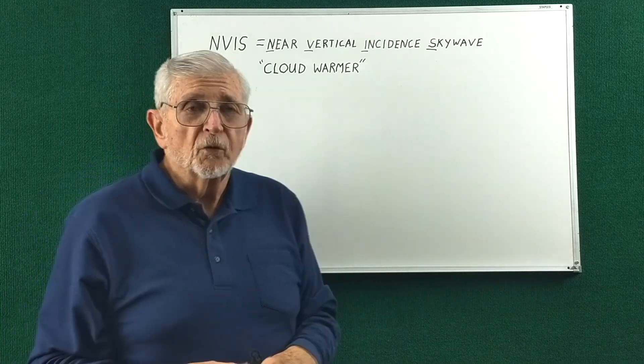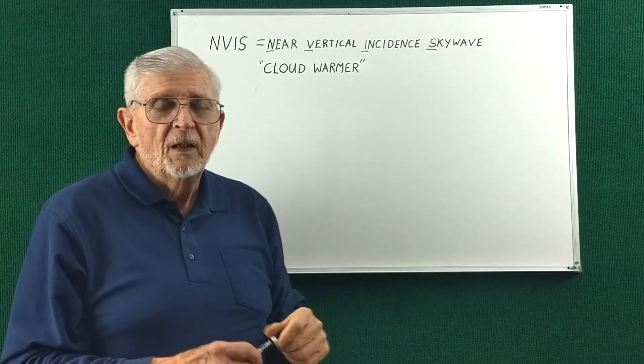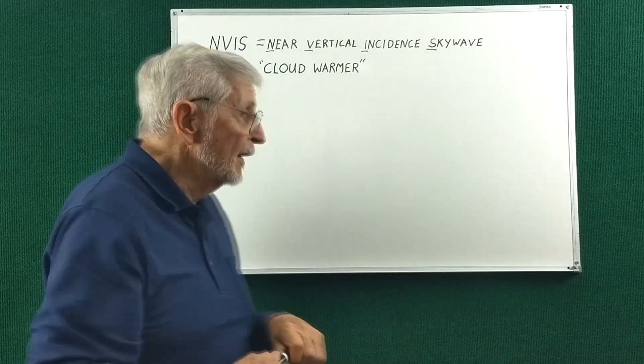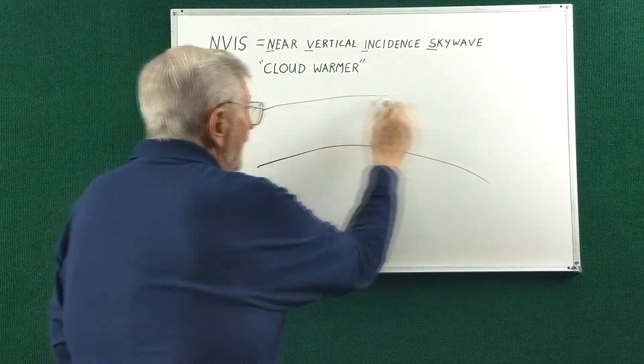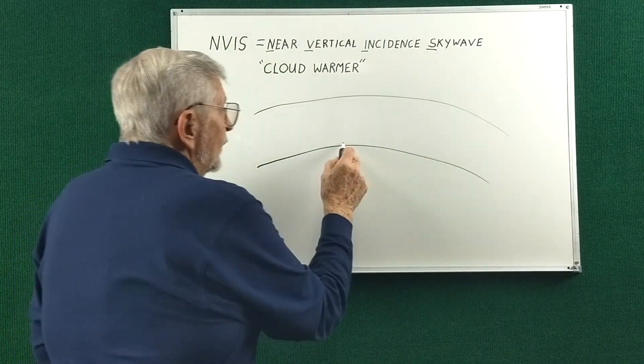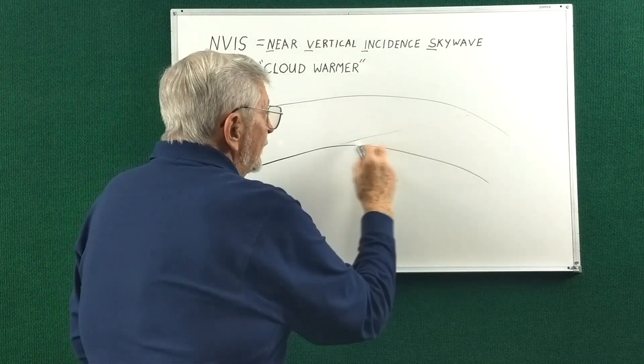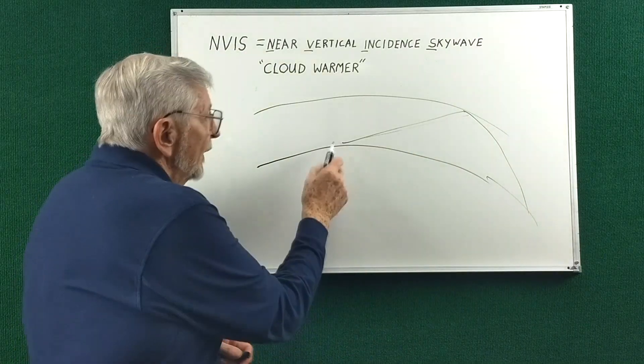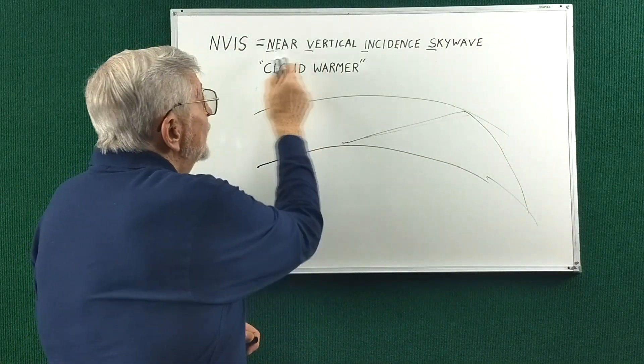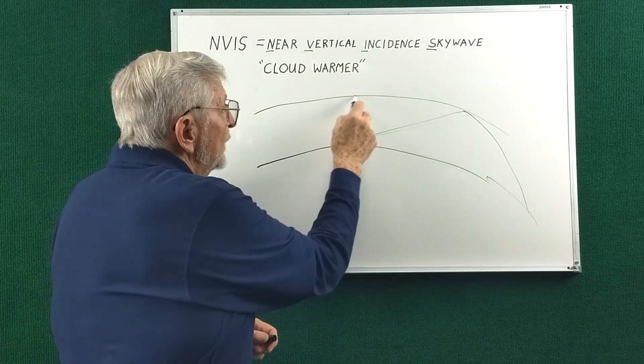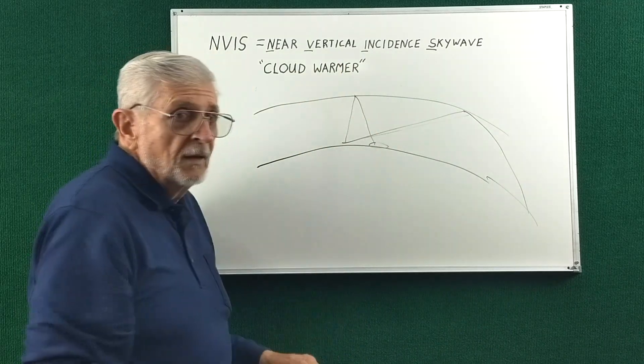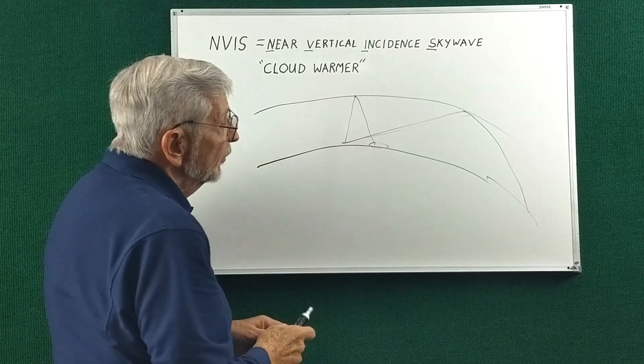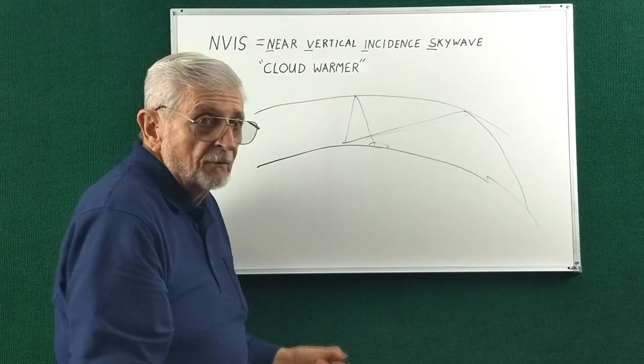But for a portable situation like POTA, you might want to work close in rather than DX all the time. If this is the Earth and that's the ionosphere, when you have a low takeoff angle, your RF skips over a very long path. But if your takeoff angle is near vertical, then you can work closer in. So for POTA, this might be desirable compared to a big skip.